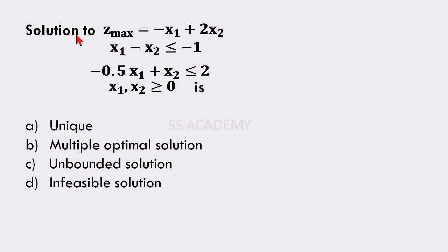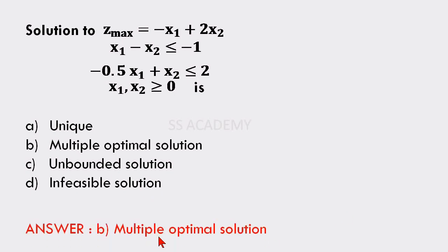Next is an important question. The objective function is Z max = −x₁ + 2x₂, with constraints: x₁ − x₂ ≤ −1; −0.5x₁ + x₂ ≤ 2; x₁, x₂ ≥ 0. Options: unique, multiple optimal solution, unbounded solution, infeasible solution. The answer is multiple optimal solution. There are two variables so this can be solved by the graphical method.